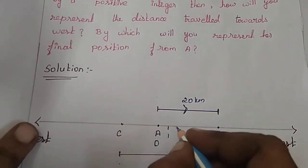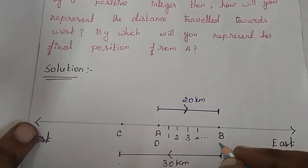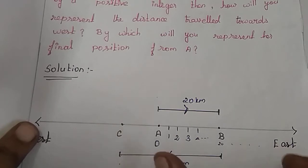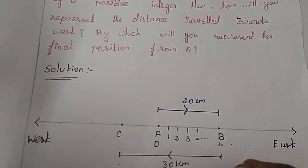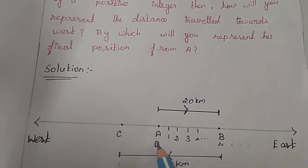On the number line: 1, 2, 3, 4, up to 20 and so on. This direction is positive — towards east is the positive integer. If the distance towards east is a positive integer.